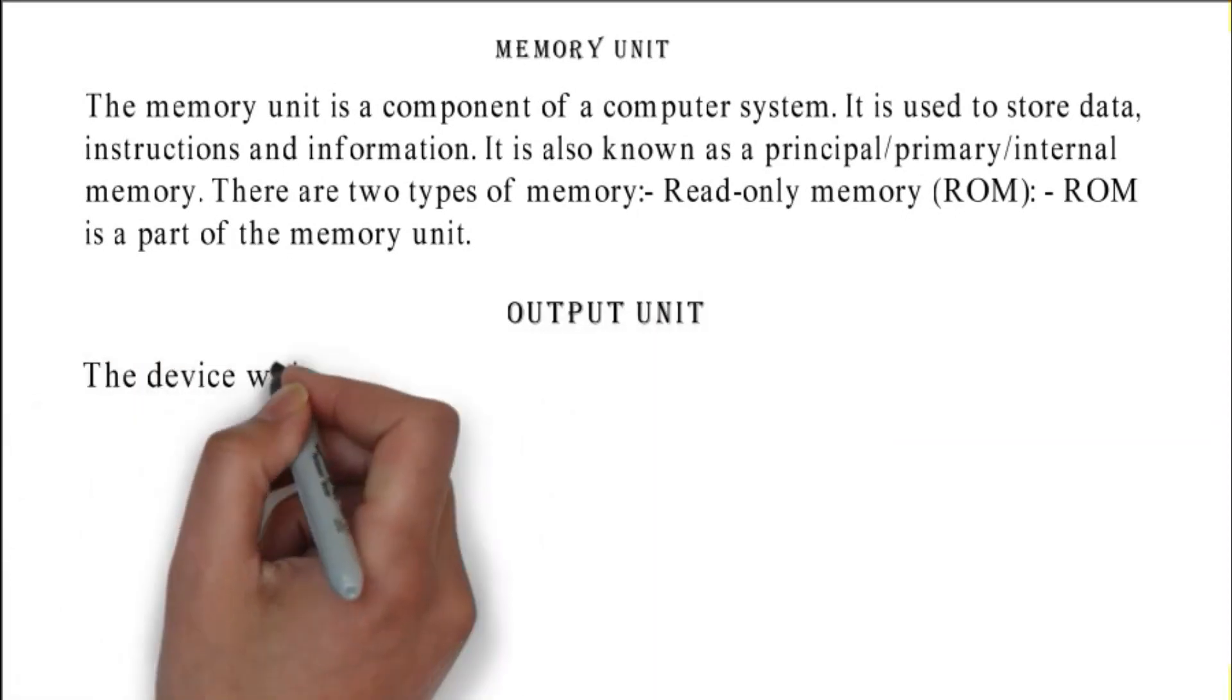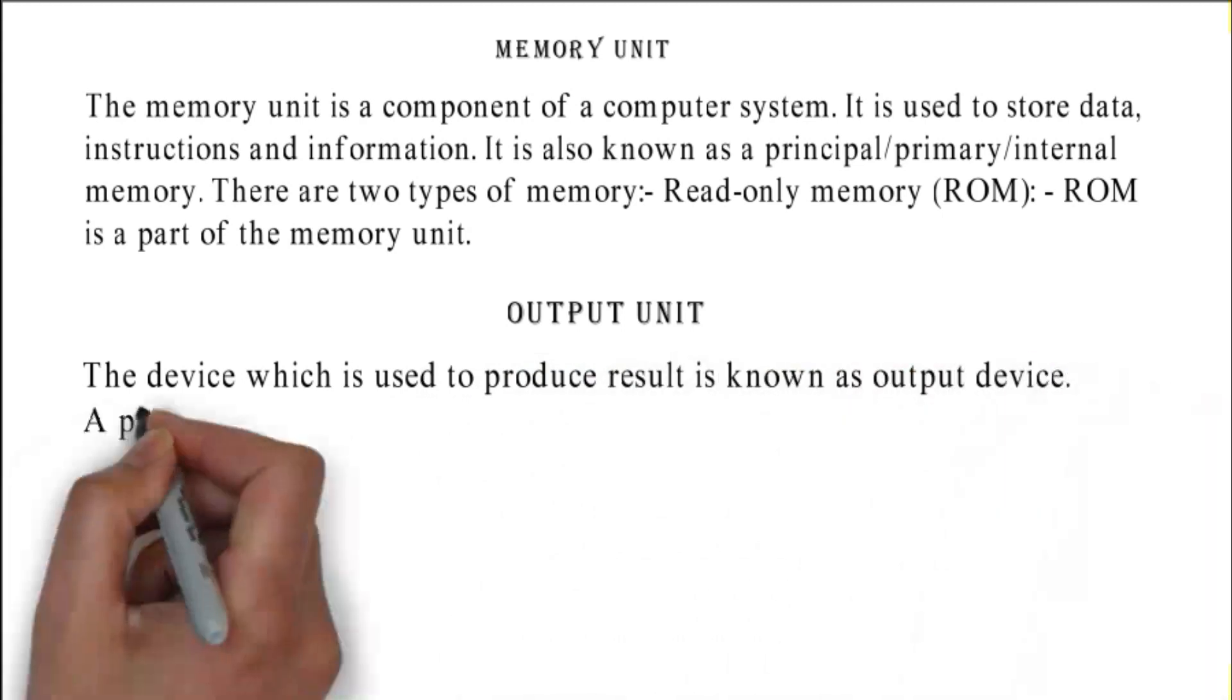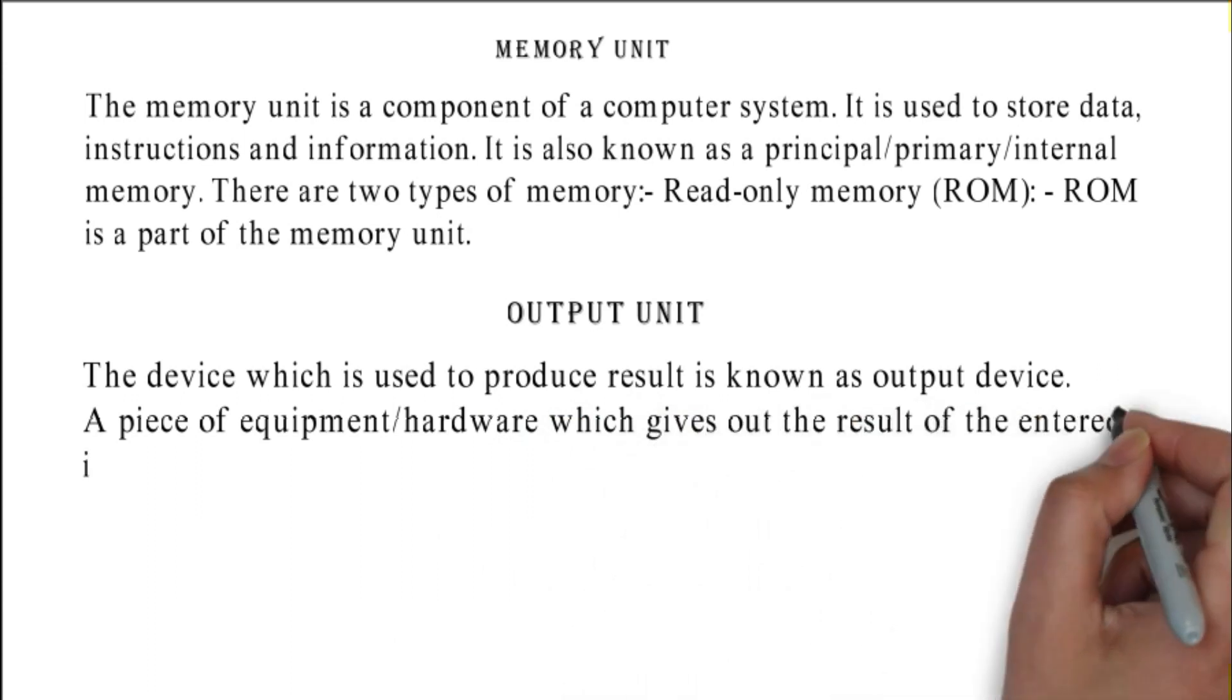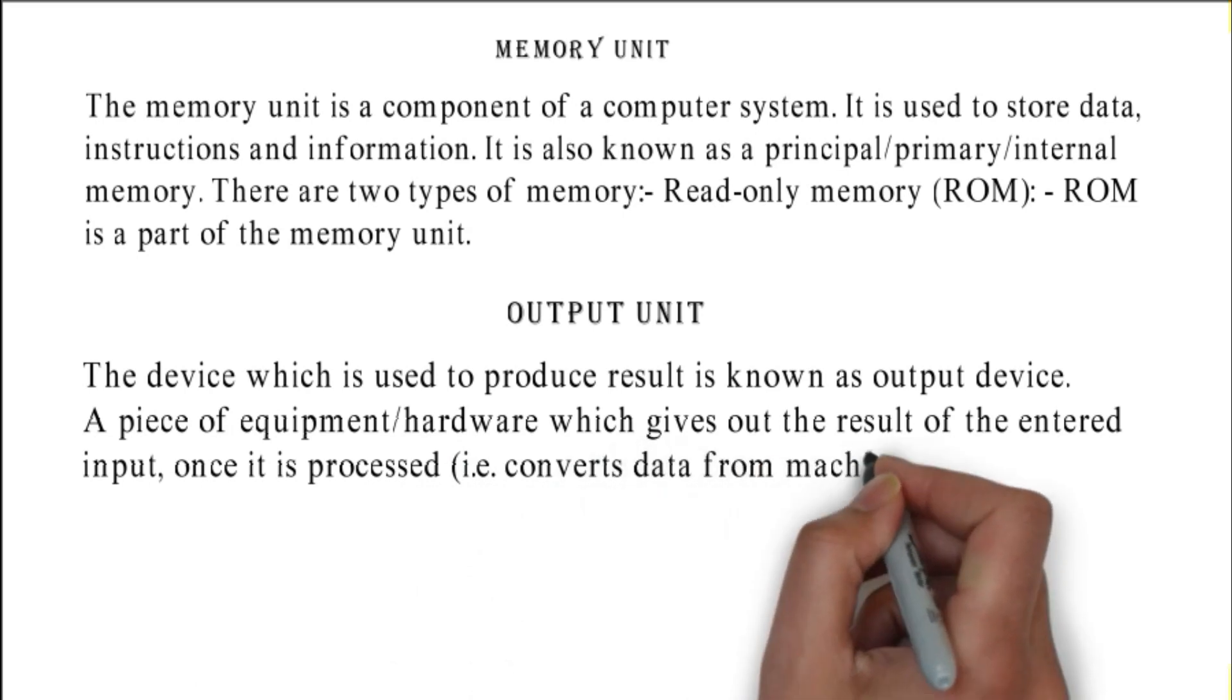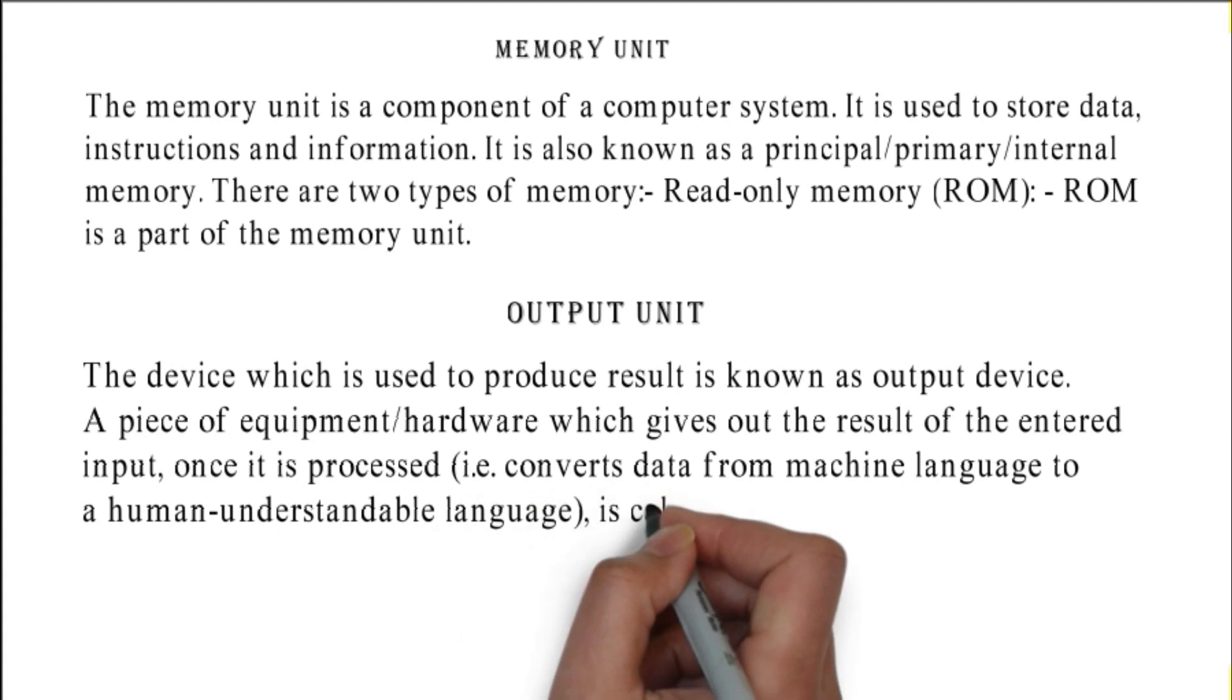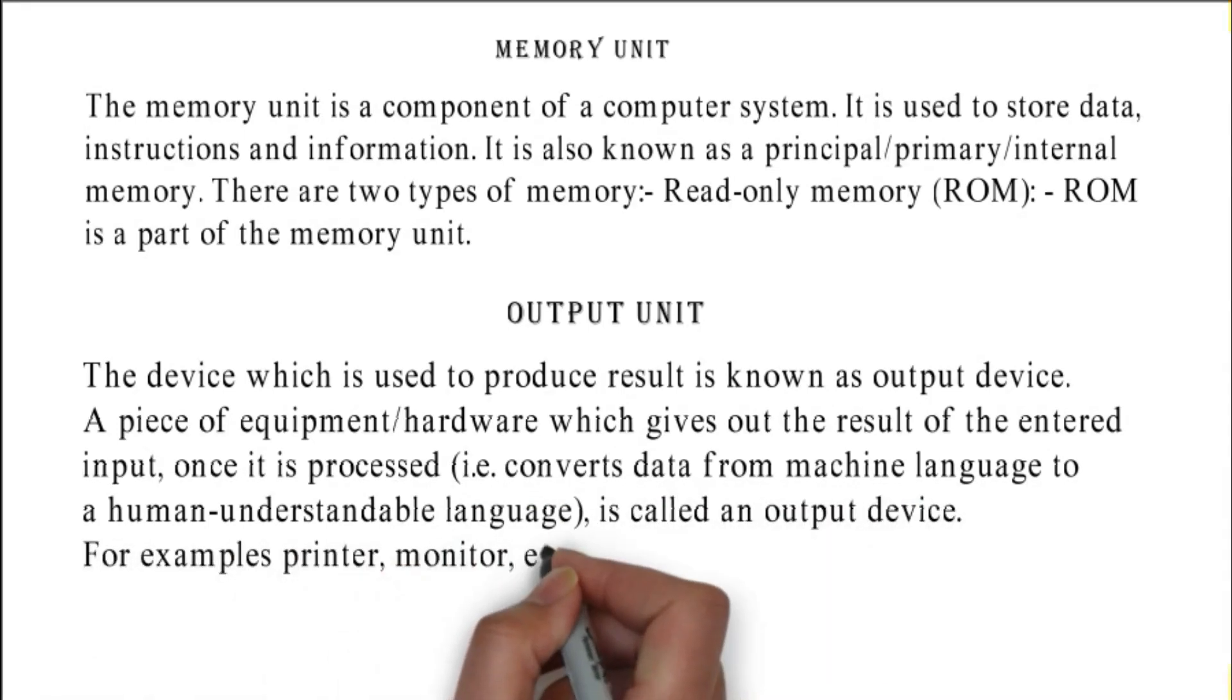Output unit: the device which is used to produce result is known as output device. A piece of equipment/hardware which gives out the result of the entered input once it is processed, i.e., converts data from machine language to a human-understandable language, is called an output device. For examples: printer, monitor, etc.